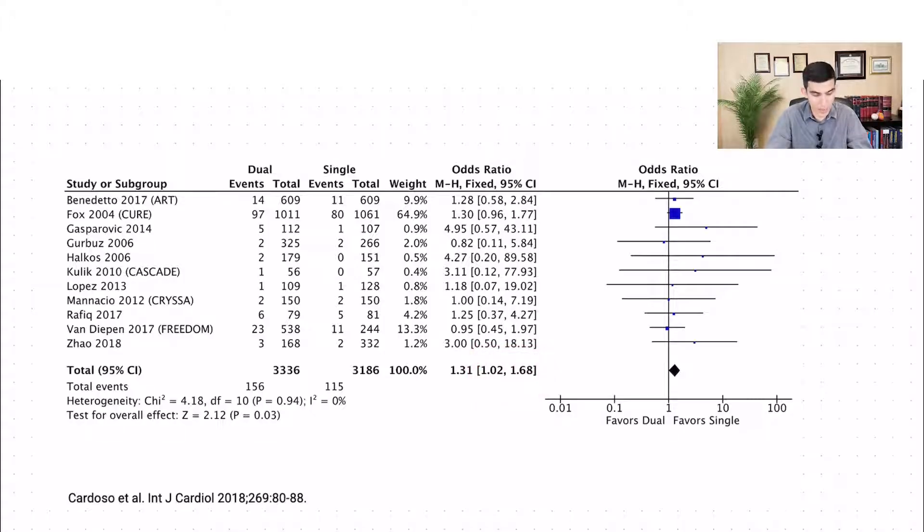Over here at the bottom, we have the p-value for the meta-analysis. In this case, a p-value of 0.03, which indicates that the result was statistically significant, increasing the outcome in the dual antiplatelet therapy group, because the odds ratio is above 1.